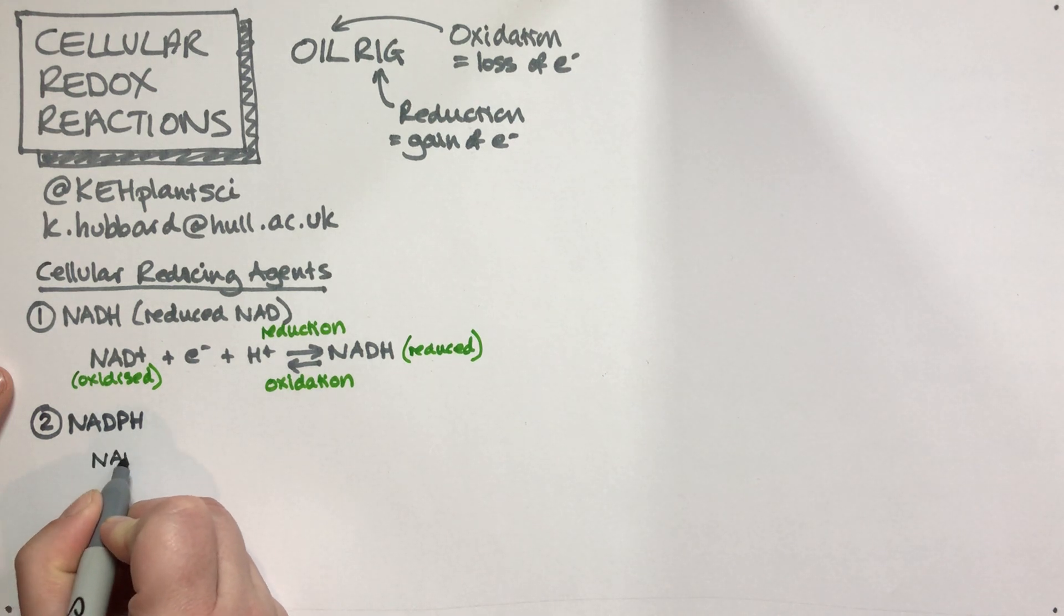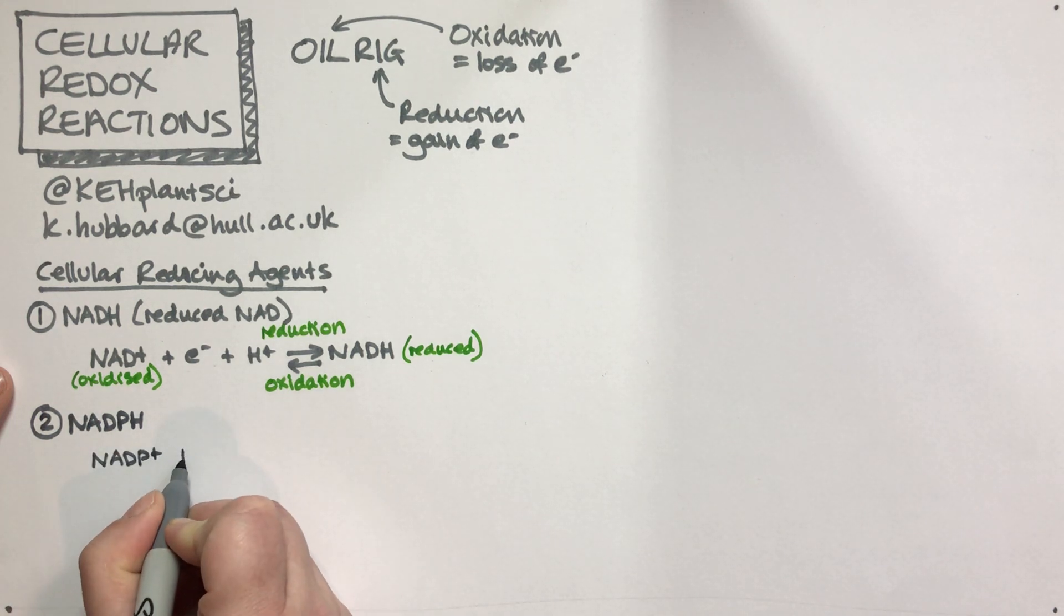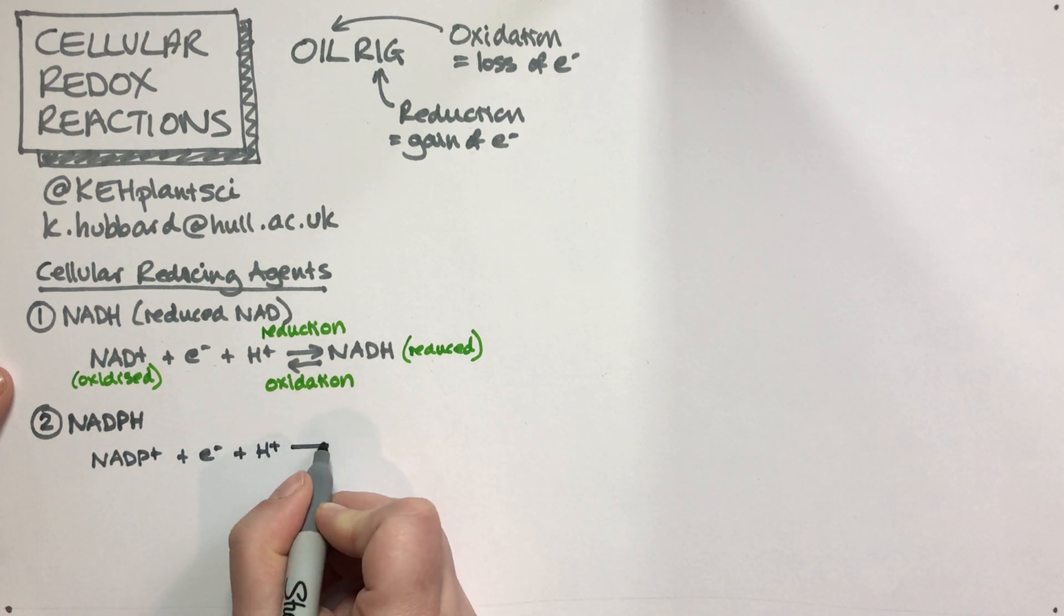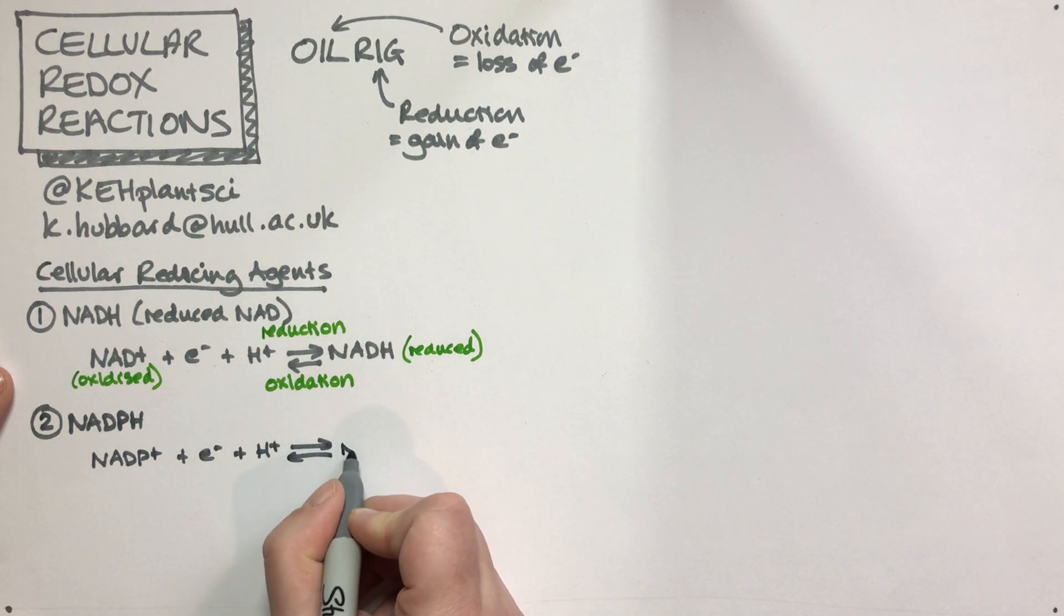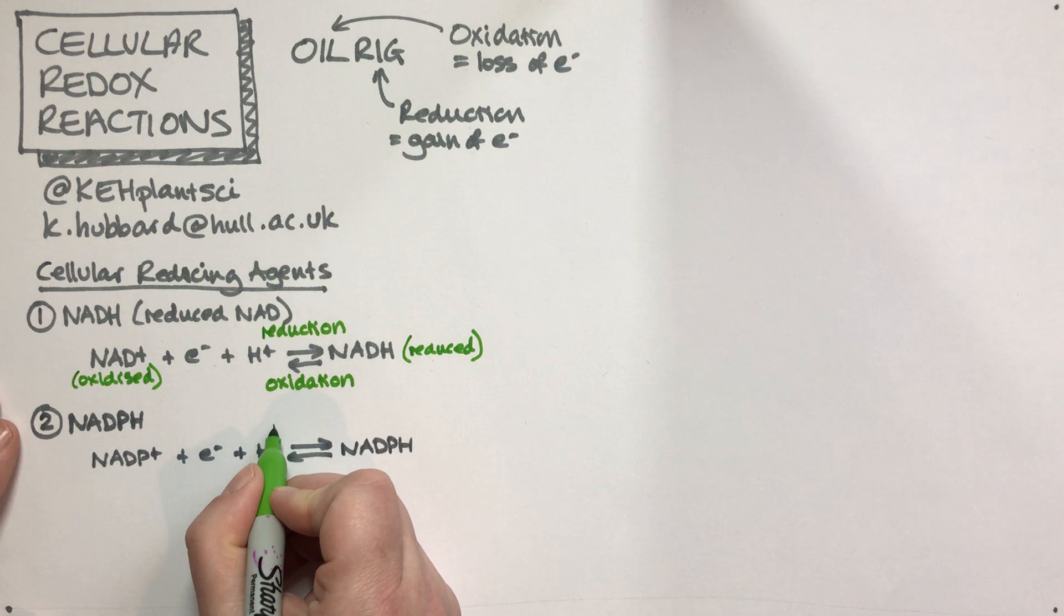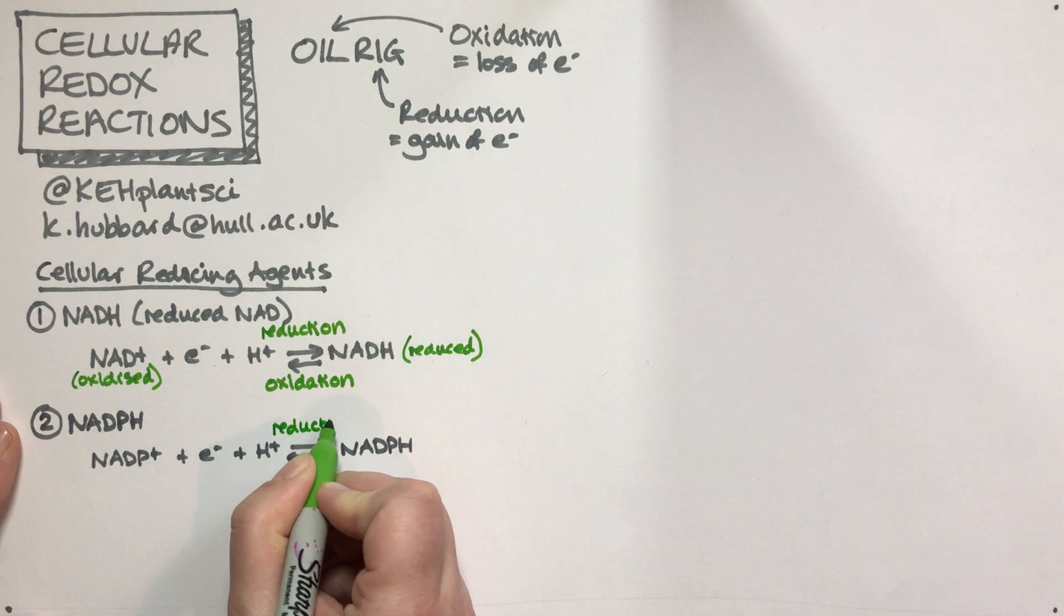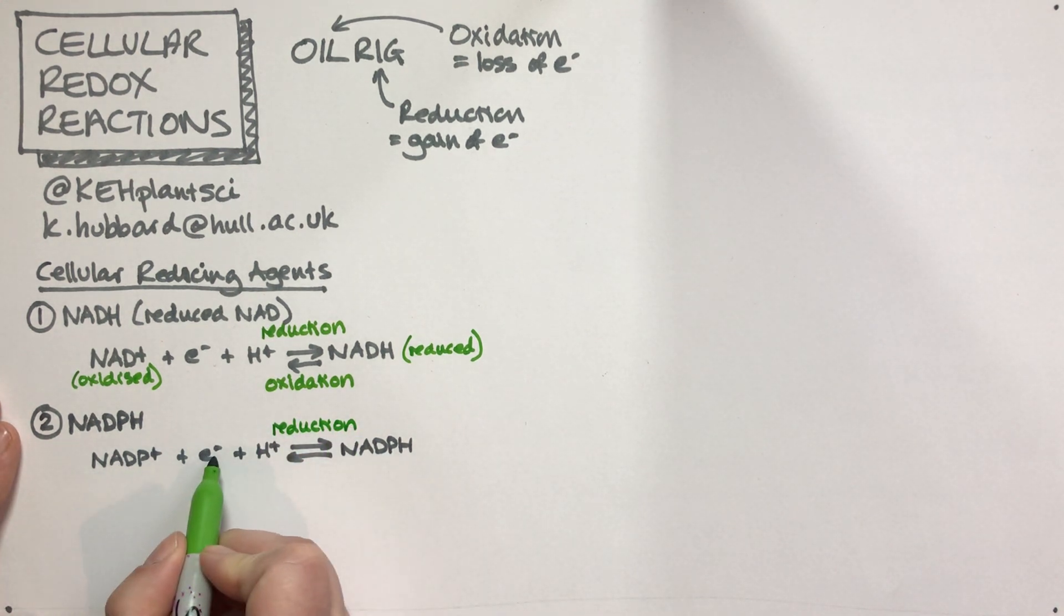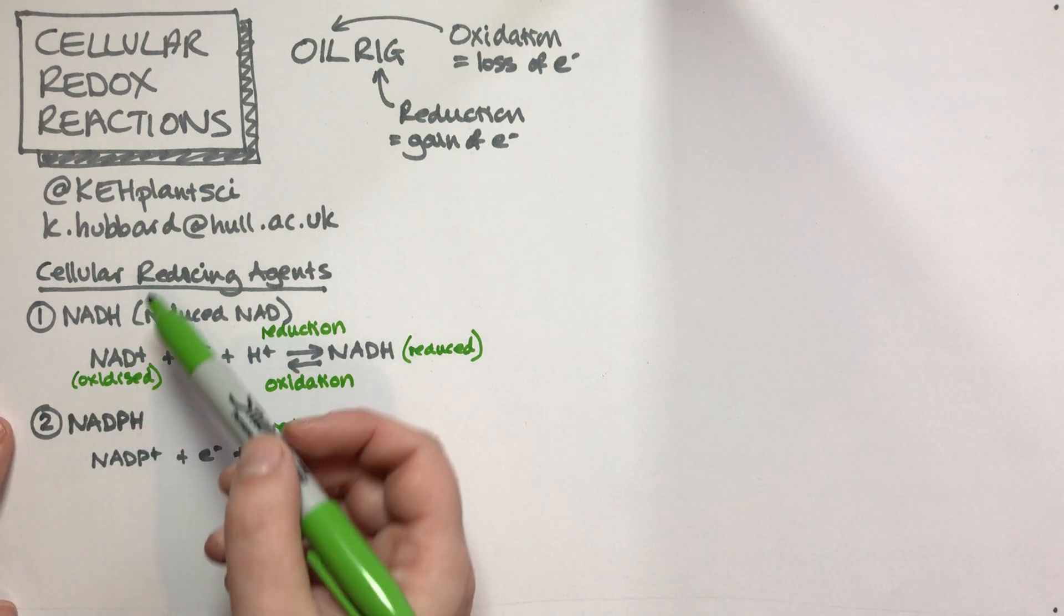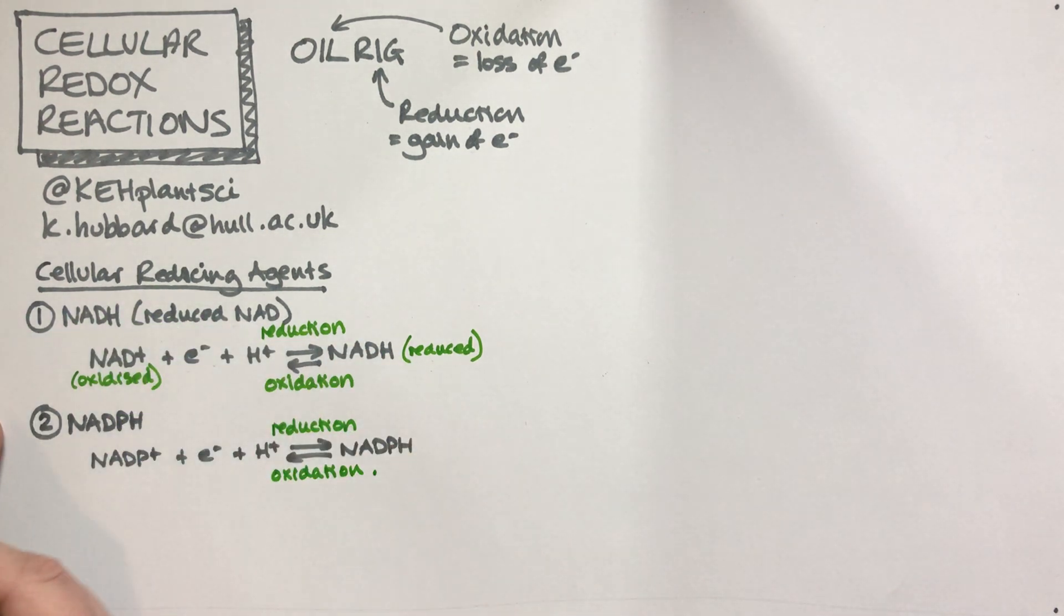The reaction is basically the same: NADP+ + e- + H+ → NADPH. In exactly the same way, that is a reduction process because the NADP+ has gained electrons, and the other way around is an oxidation process.